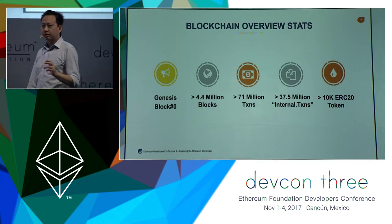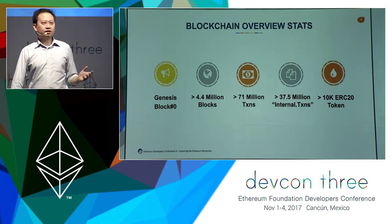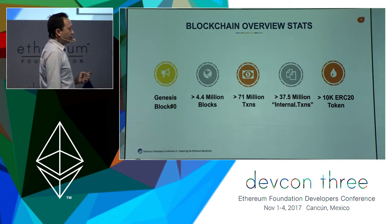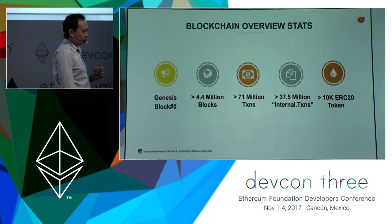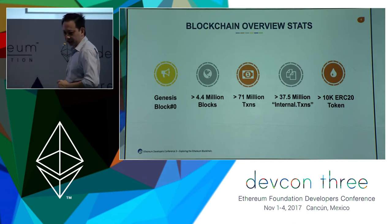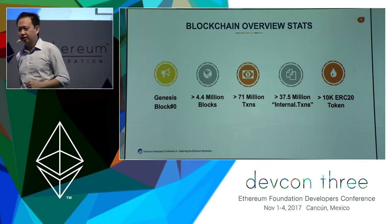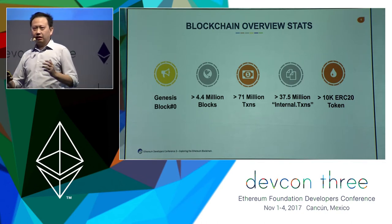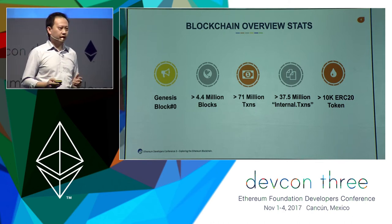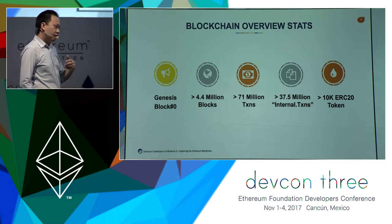For a quick blockchain overview: the Ethereum blockchain was first kick-started with the Genesis Block Zero on July 30th, 2015. Fast forward to today, the Ethereum blockchain has processed more than 4.4 million blocks, which consists of more than 71 million transactions, of which there are more than 37.5 million internal transactions. An internal transaction isn't an official term, but it's a term that block explorers came to adopt to represent a message call or action that resulted in a value transfer.